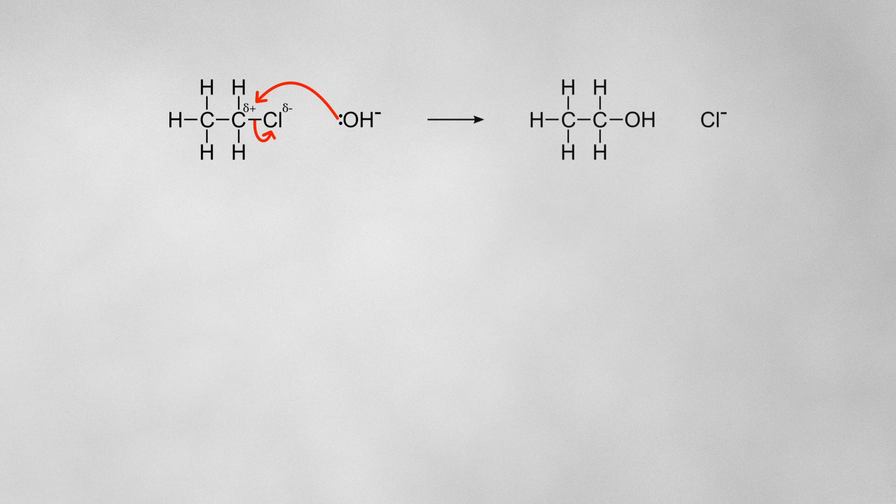In an E2 mechanism, there are two reactants involved in the rate determining step. If the hydroxide behaves as a nucleophile, it forms a bond with the delta plus carbon atom which kicks out a halide ion. This would be the other type of nucleophilic substitution, SN2.